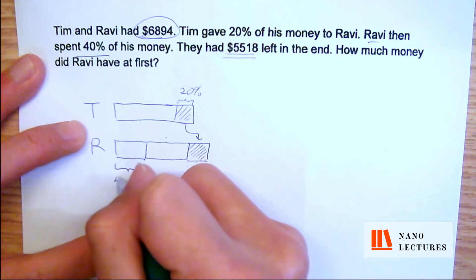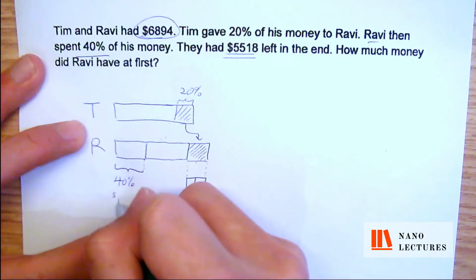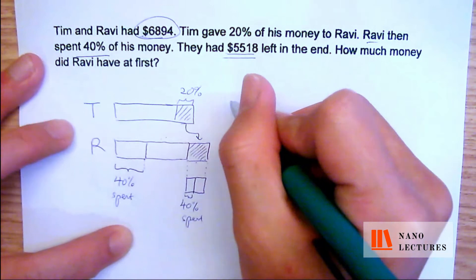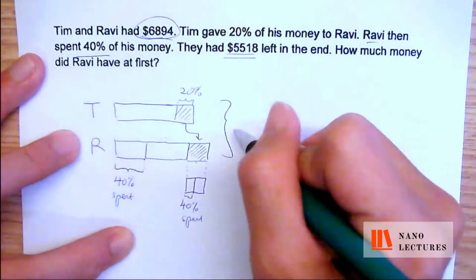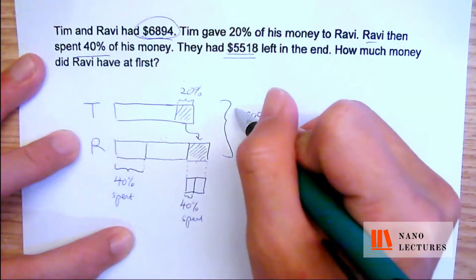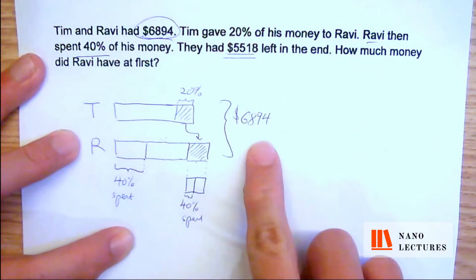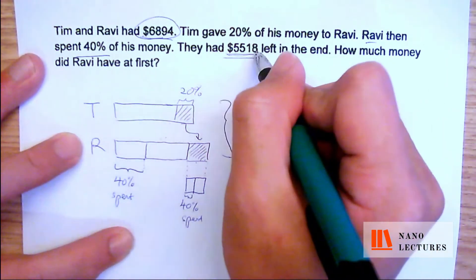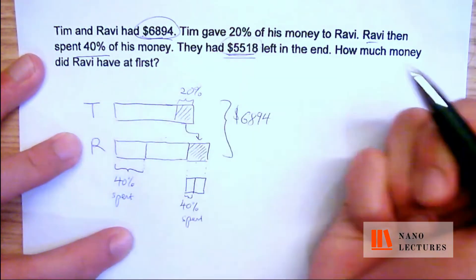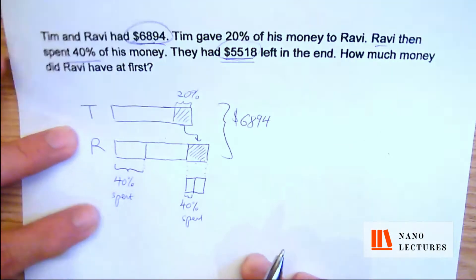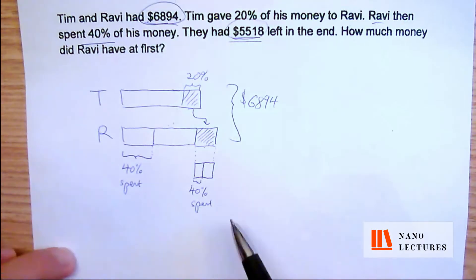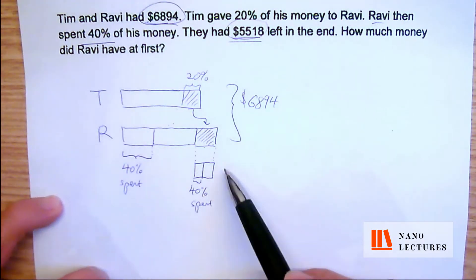The total that they have originally is $6,894. They said that they had this amount of money left in the end. So using this model we have to figure out this question — and this question is trickier than it looks.